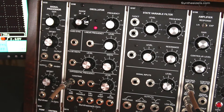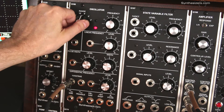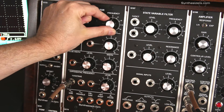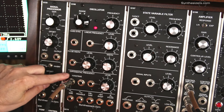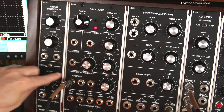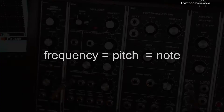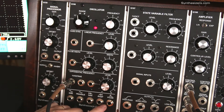The oscillator's pitch is set by a combination of the range switch, the frequency knob, and the control voltage, which typically comes from a keyboard or a MIDI interface. The terms frequency, pitch, and note can be used interchangeably. The oscillator produces several waveforms simultaneously,